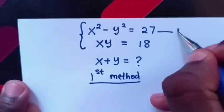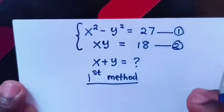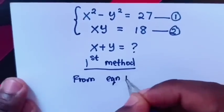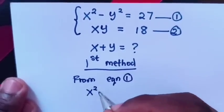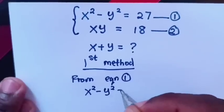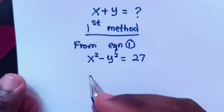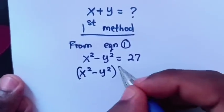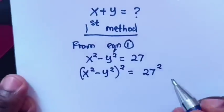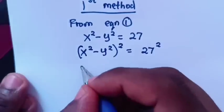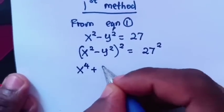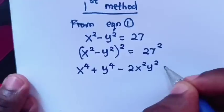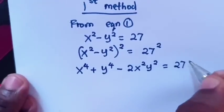First method. We will call x squared minus y squared equals 27 as equation 1, and xy equals 18 as equation 2. From equation 1, which is x squared minus y squared equals 27, we square both sides. So when we square, this will be x to the power 4 plus y to the power 4 minus 2x squared y squared equals 27 squared.